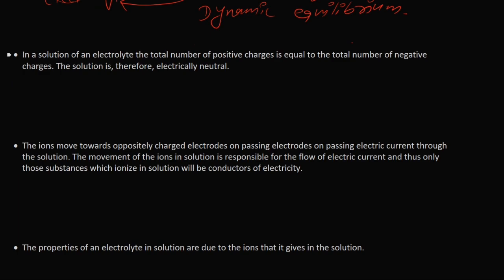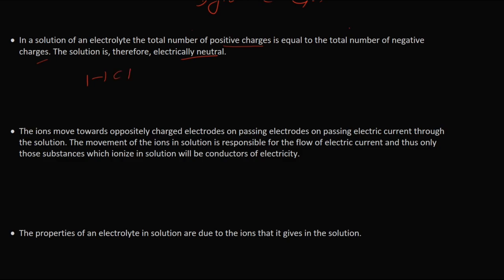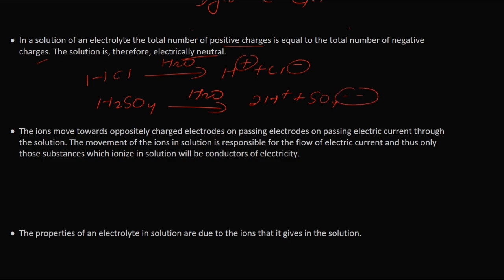The third postulate is: in a solution of an electrolyte, the total number of positive charges is equal to the total number of negative charges — meaning the solution is electrically neutral. For example, HCl in water gives H⁺ plus Cl⁻ — one positive and one negative charge. Similarly, sulfuric acid in water gives 2H⁺ plus SO₄²⁻ — two positive charges and two negative charges. So the number of positive and negative charges are equal and the solution is electrically neutral.